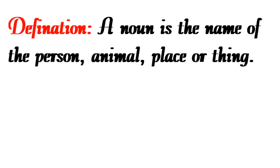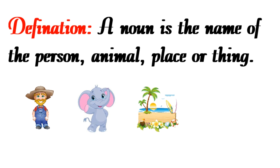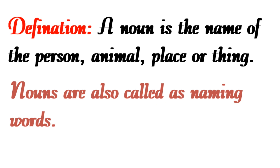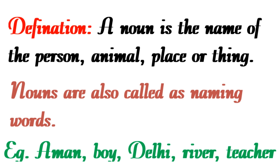So let's look at the definition: a noun is the name of a person, animal, place, or thing. Nouns are also called naming words. Basically, each and everything around us has got a particular name by which we call it or know it — such words are called nouns. For example: Aman, boy, Delhi, river, teacher, etc.